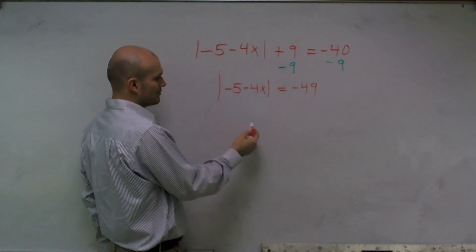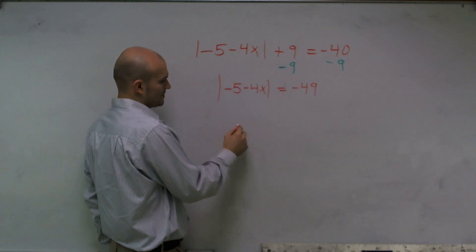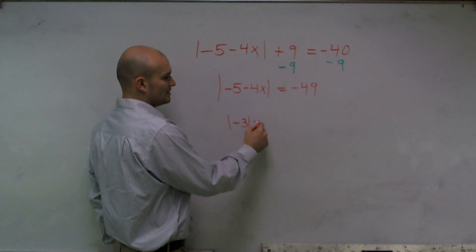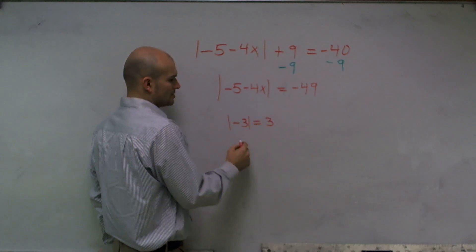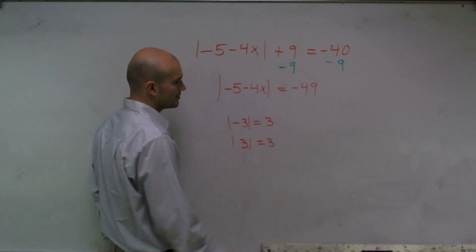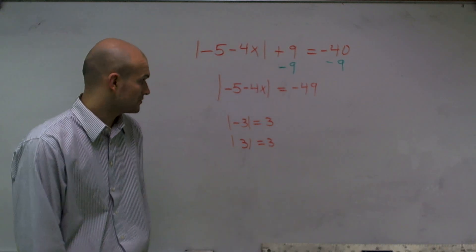Let's say my number was negative 3. Well, the absolute value of negative 3 is still going to equal 3. The positive value of 3, the absolute value of 3, is always going to equal 3.